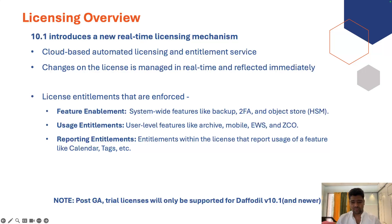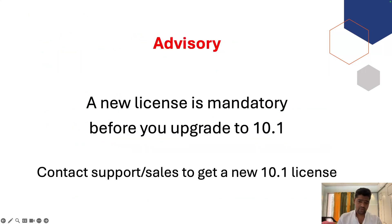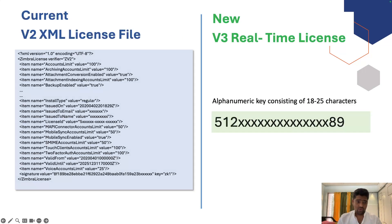To replace that, we introduced the new real-time licensing model in 10.1. This is a cloud-based automated licensing and entitlement service. Once an environment receives a license key and it is activated, no other action will need to occur on the environment — management of the license happens in the cloud-based service and is pulled by the Zimbra environment within a few minutes. A new license is mandatory before you upgrade to 10.1; if you don't have one, contact support and sales.